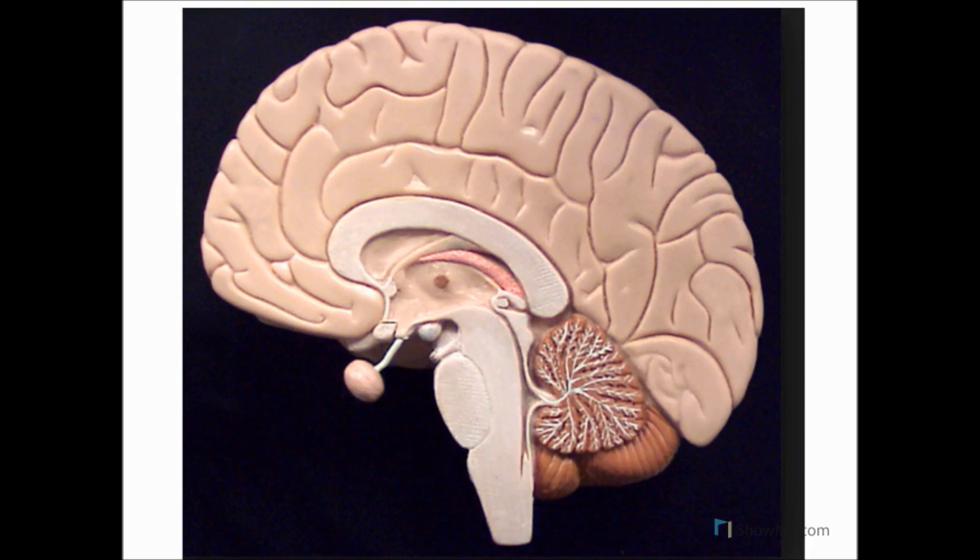Remember that the hypothalamus is part of the diencephalon. Diencephalon means between brain—it means between the cerebrum and the midbrain and includes two major structures: one is the thalamus and the other is the hypothalamus. Hypo just means below the thalamus, it's slightly more ventral as well.